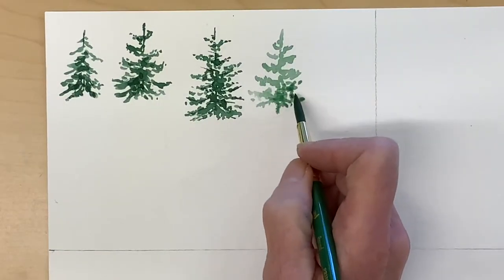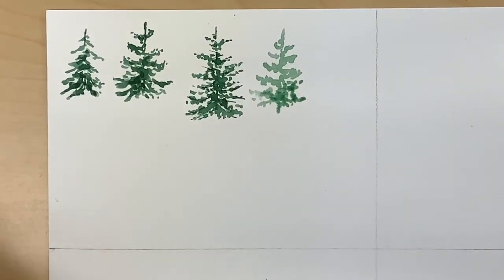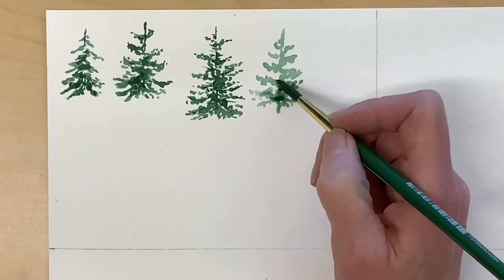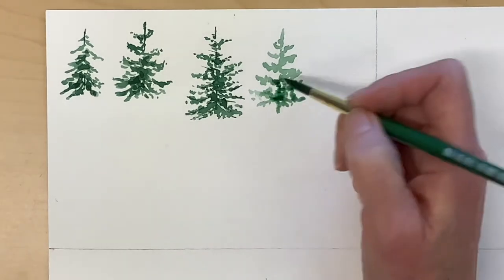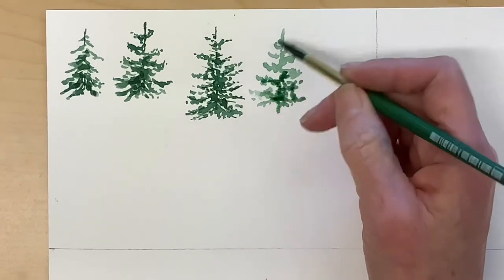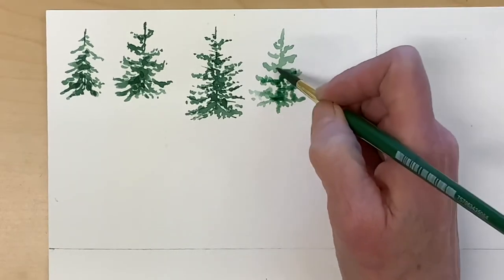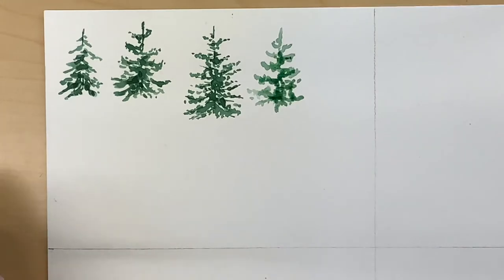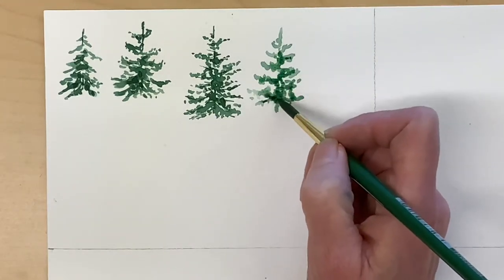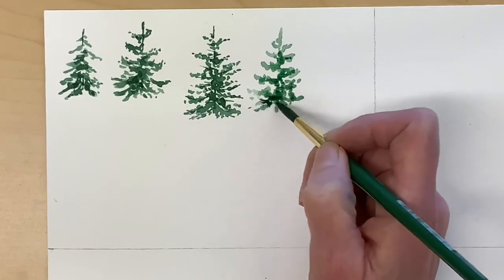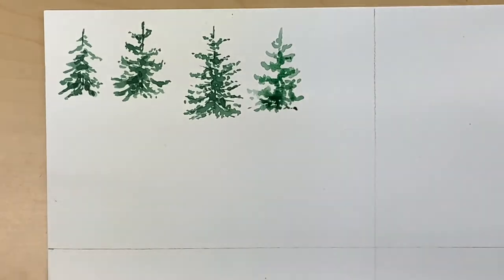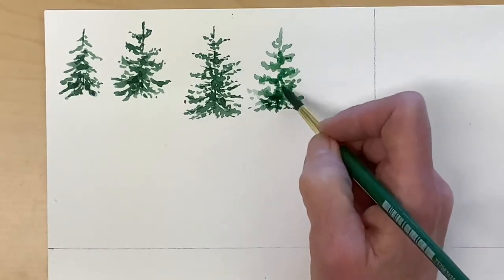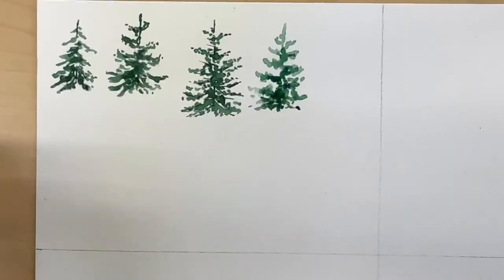Now I've taken some lighter paint and my number six brush. And I'm making the marks bigger and less detailed. Going in with some darker paint over the top. The top part already dried. But ideally, it would still be wet so that the colors could bleed into each other.